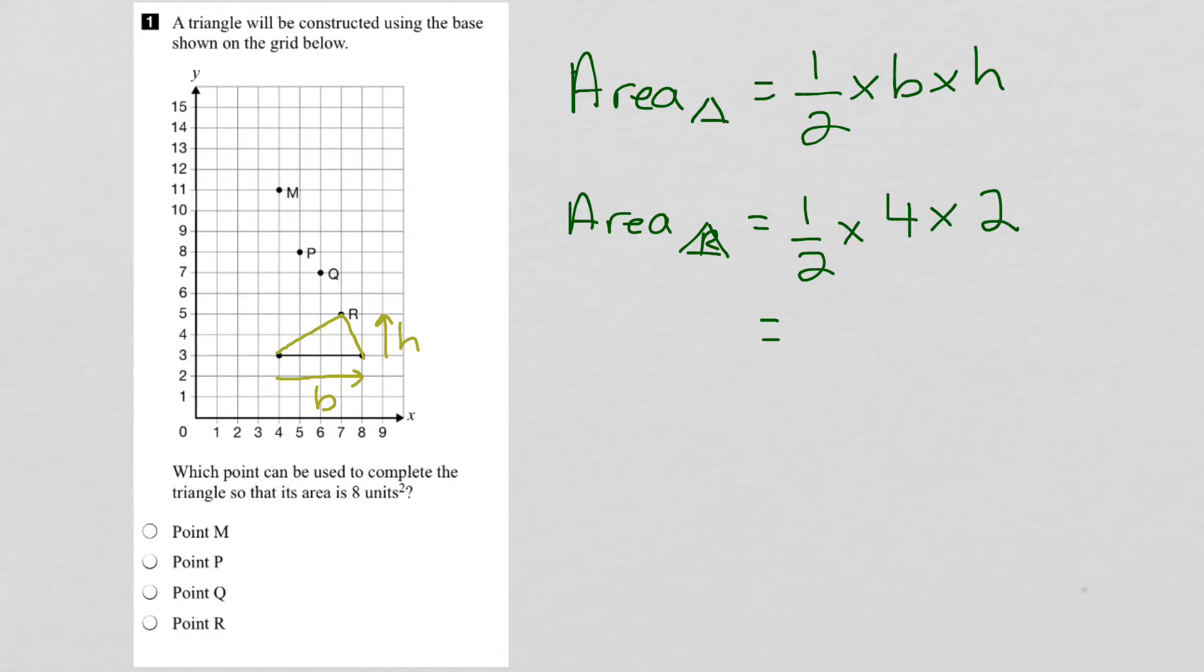And if we work this out, 1 half times 4, or half of 4 is 2, times the height of 2, will give us 4 units squared for the area of the triangle formed using point r. Now we want the area to be 8 units squared, so this point does not give us the right answer.